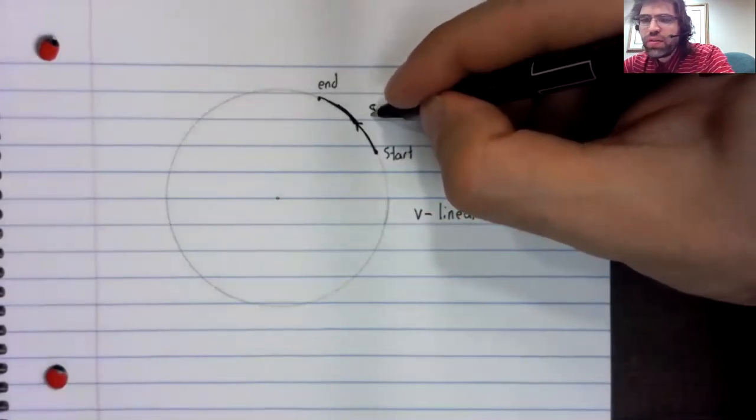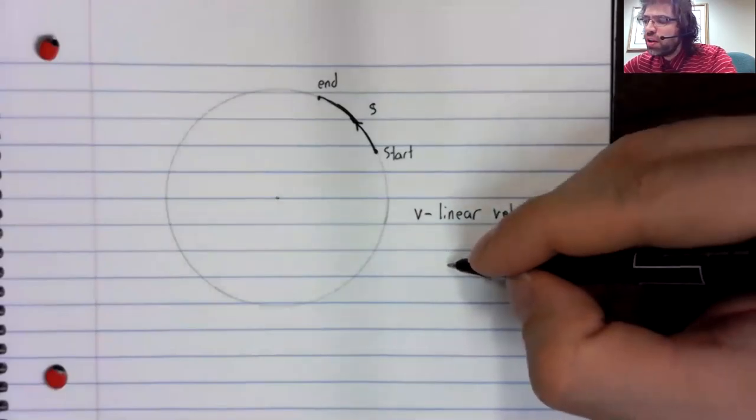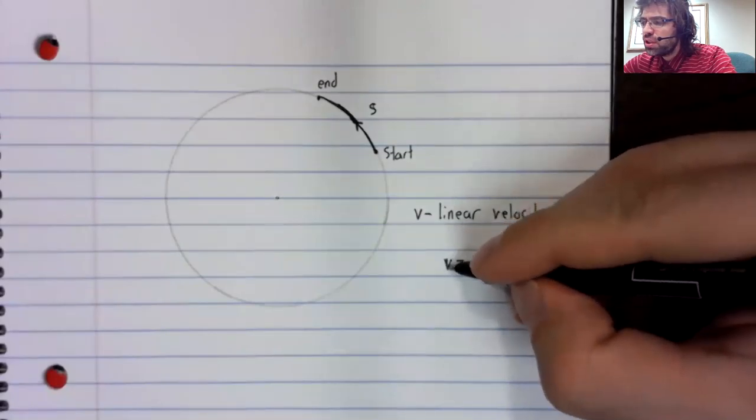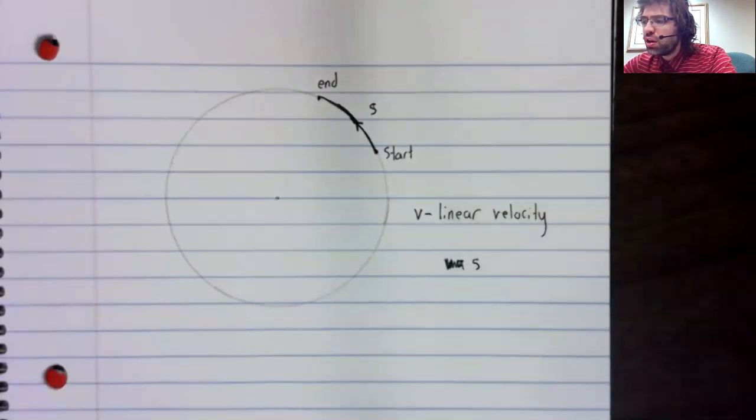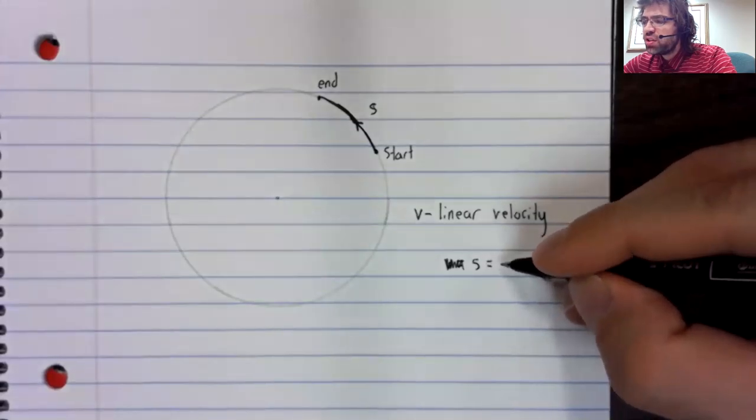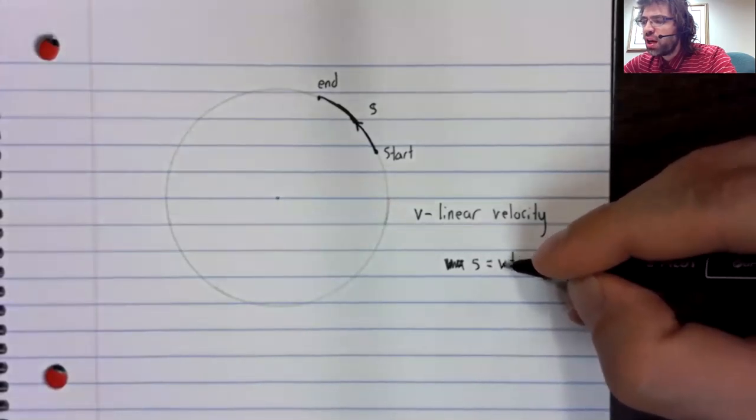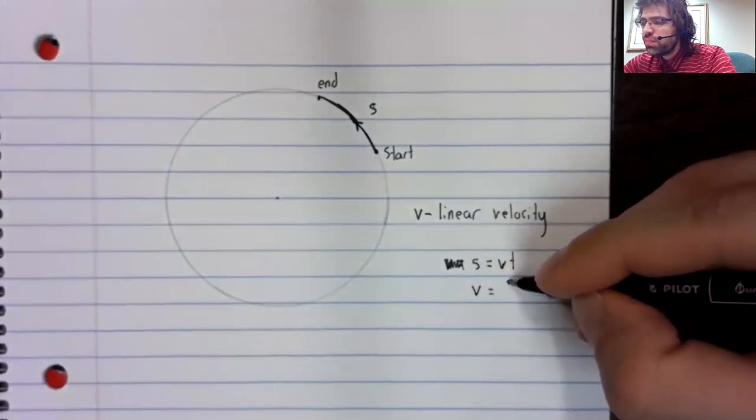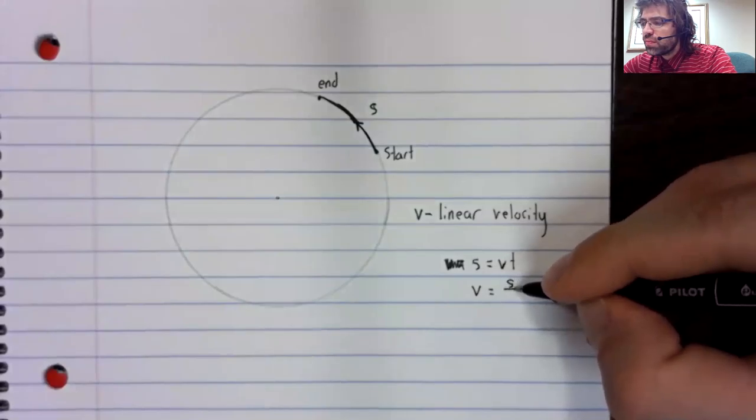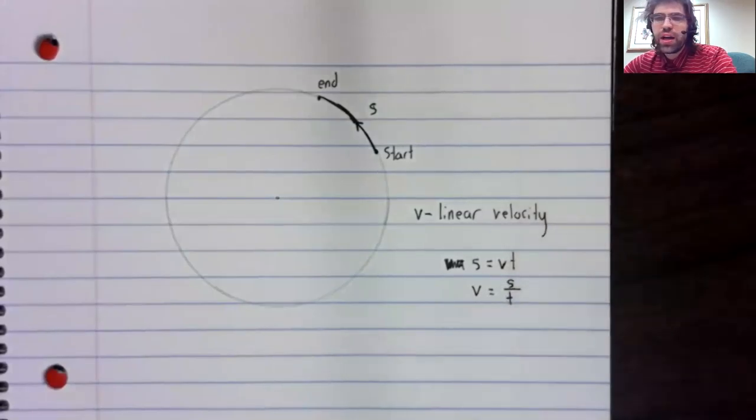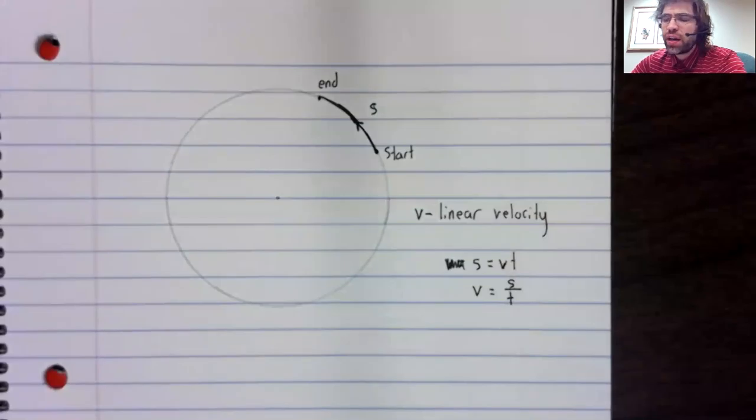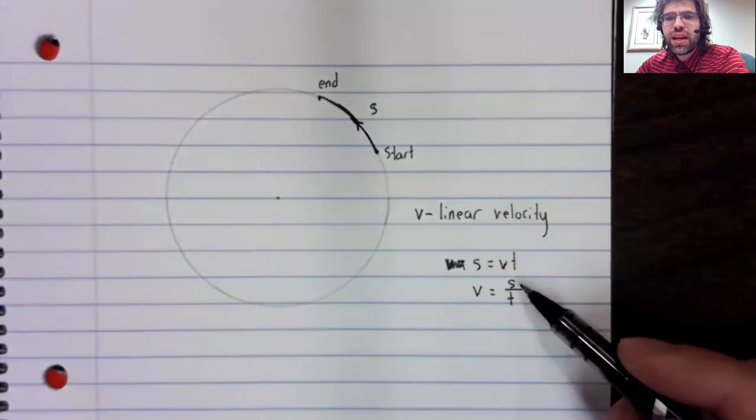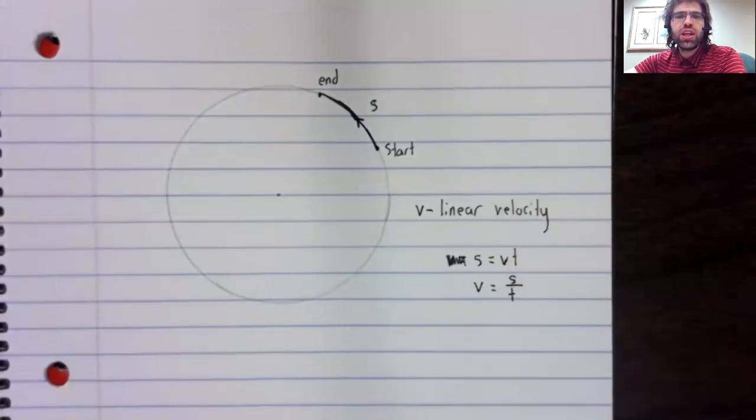And we gave formulas for the linear velocity. In the previous video, distance equals rate times time, so velocity is distance divided by time. And then we gave another formula where we replace this S with R times theta.